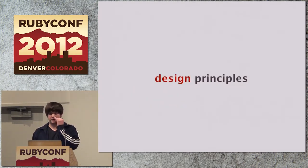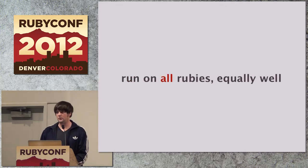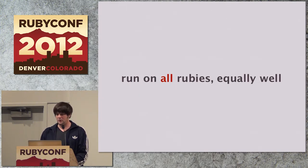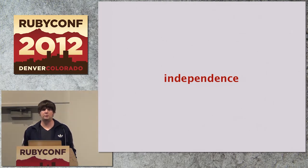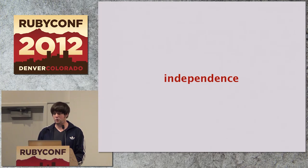Let's talk about the design principles of Crypt. My goal is to use Ruby as much as possible. And also, I want to have it run on each Ruby equally well, which is not the case right now with OpenSSL. And by being able to choose, we will also be more independent — not as tightly bound to OpenSSL anymore.